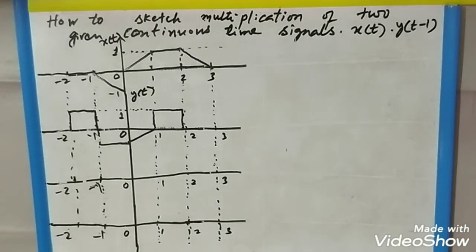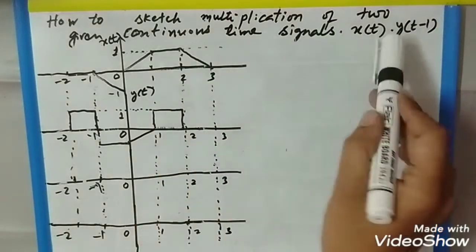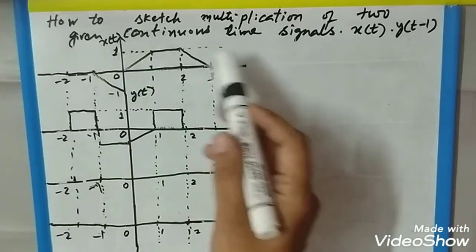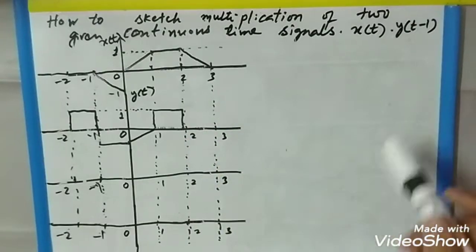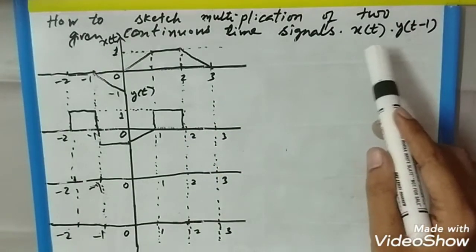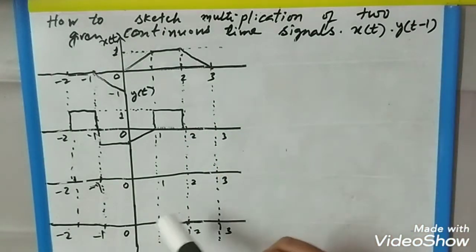Hello students, today we are going to see the video on signals and systems for engineering students — specifically how to sketch the multiplication of two given continuous time signals, that is x(t) into y(t-1).